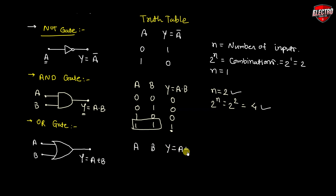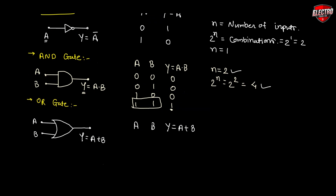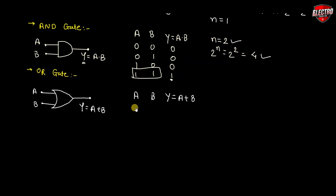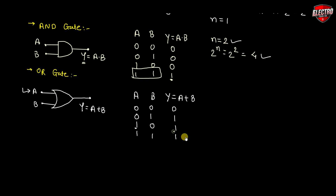For the OR gate, A, B and Y = A + B. The combinations are: 0+0 = 0; 0+1 = 1; 1+0 = 1; 1+1 = 1. In the OR gate, if any one signal is active high, we get output 1. If both signals are 0, then and only then we get Y = 0 in the OR gate.